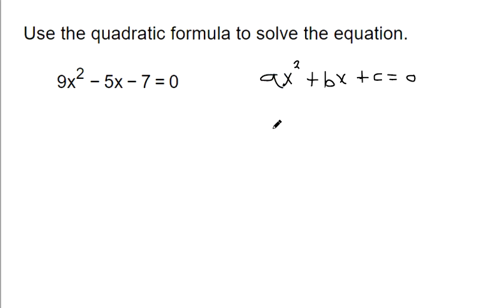When it's in this form, we can identify the a as the number next to the x squared, the b as the number next to the regular x. So take the negative sign with you. And then c is negative 7. So once you have those identified, you can plug them into this formula to find the solutions.